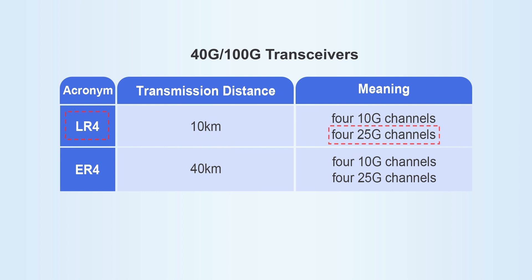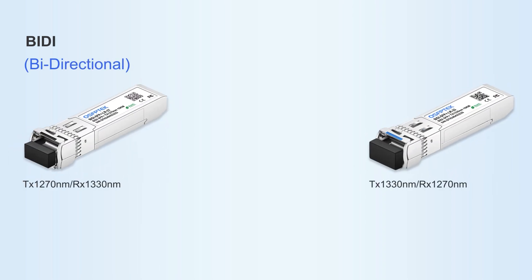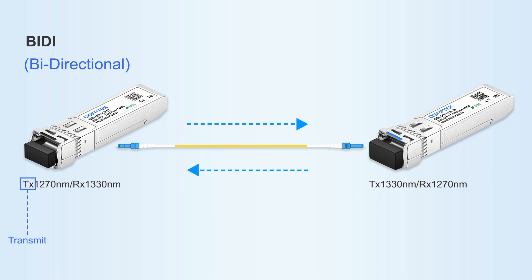These are the most common meanings of these acronyms. There are also some differences across different brands and modules, so you need to pay attention when purchasing. There are also some special acronyms, like BIDI (bi-directional), which uses WDM to send and receive data on a single fiber using different wavelengths, TX for transmit, and RX for receive.